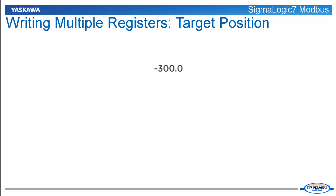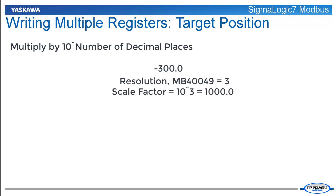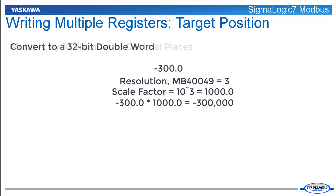Here is an example of writing negative 300 to the target position registers. The first step is to scale the value by 10 raised to the number of implied decimal places to create a 32-bit signed integer. In this example, the resolution register is set to 3, so the scale factor is 10 raised to the third power, which equals 1000. We multiply the target position by the scale factor to arrive at an integer value of negative 300,000.